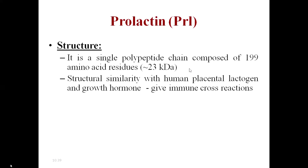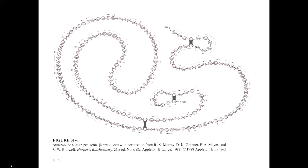Prolactin, human placental lactogen, and growth hormone all share a common ancestor gene. Because of this, these three hormones are structurally similar — this is called structural homology. Due to these structural similarities, they can sometimes cause cross immune reactions.